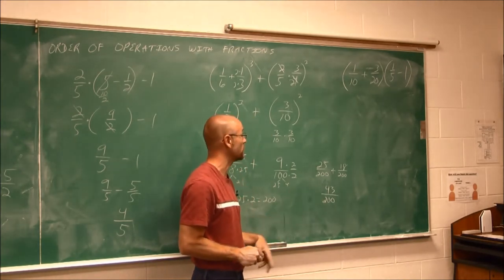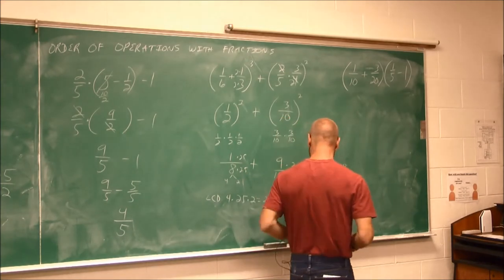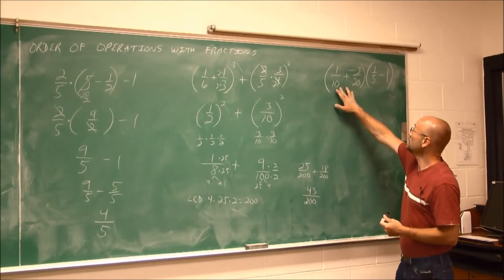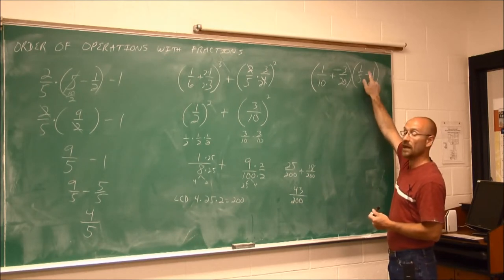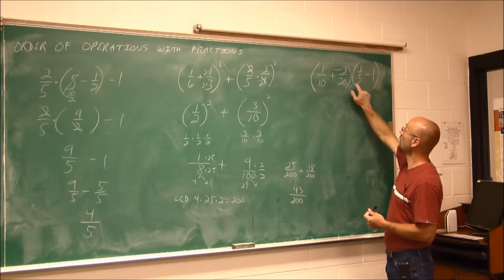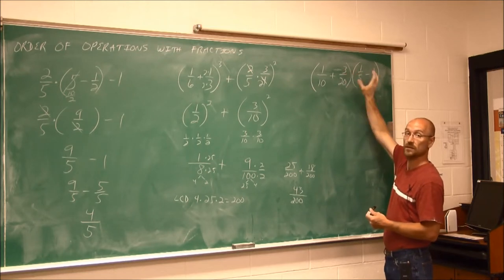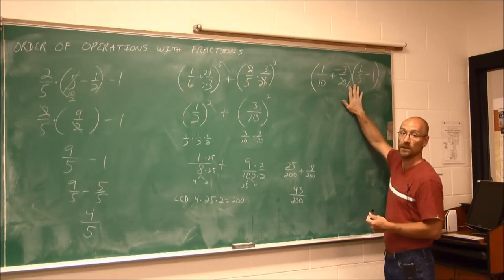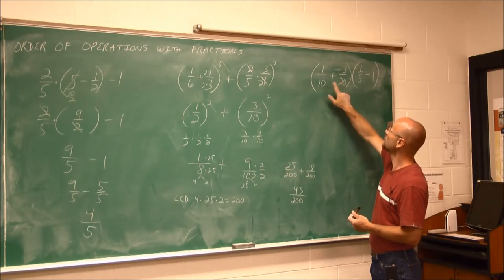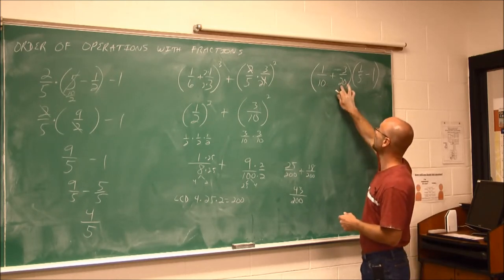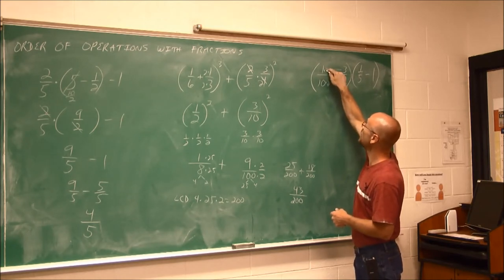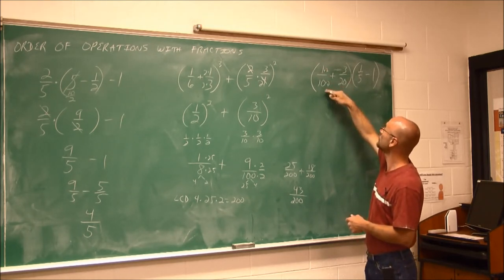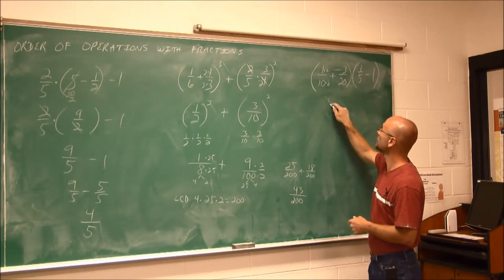Alright, one last example. We have one-tenth plus three-twentieths. And then in this parentheses, we have one-fifth minus 1. And if we keep in mind, parentheses adjacent to each other tell us we need to multiply. So first I have to have that common denominator. And I see that 20 is a multiple of 10. So I multiply it by 2. So I have 2-twentieths plus 3-twentieths would give me 5-twentieths.